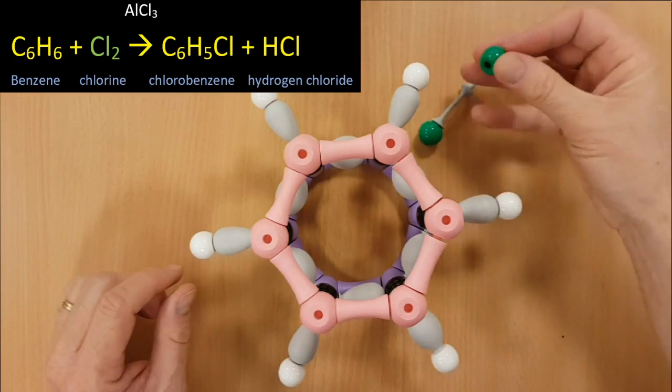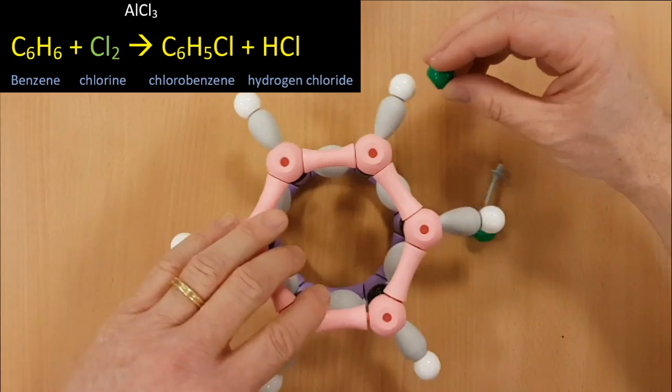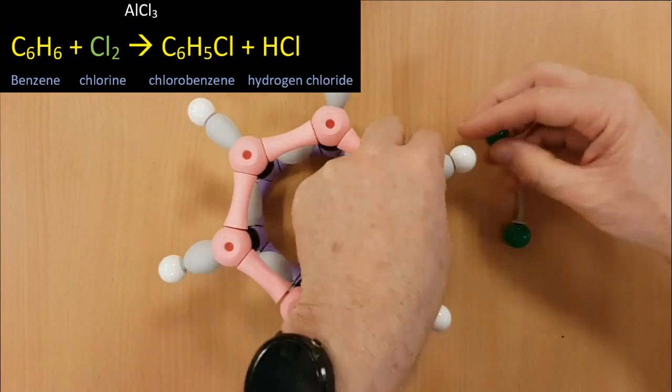Now this Cl+ is an electrophile. It loves electrons. It's going to come on in and it's going to swap out with one of the hydrogens.